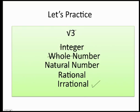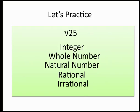What about the number 4? It's an integer, it's a whole number, it's a natural number, it's a rational number, but it's not an irrational number. Now, the square root of 25 — this is a tricky one. Don't forget, the square root of 25 equals 5 or negative 5. Therefore, the square root of 25 is going to be an integer and also a rational number.